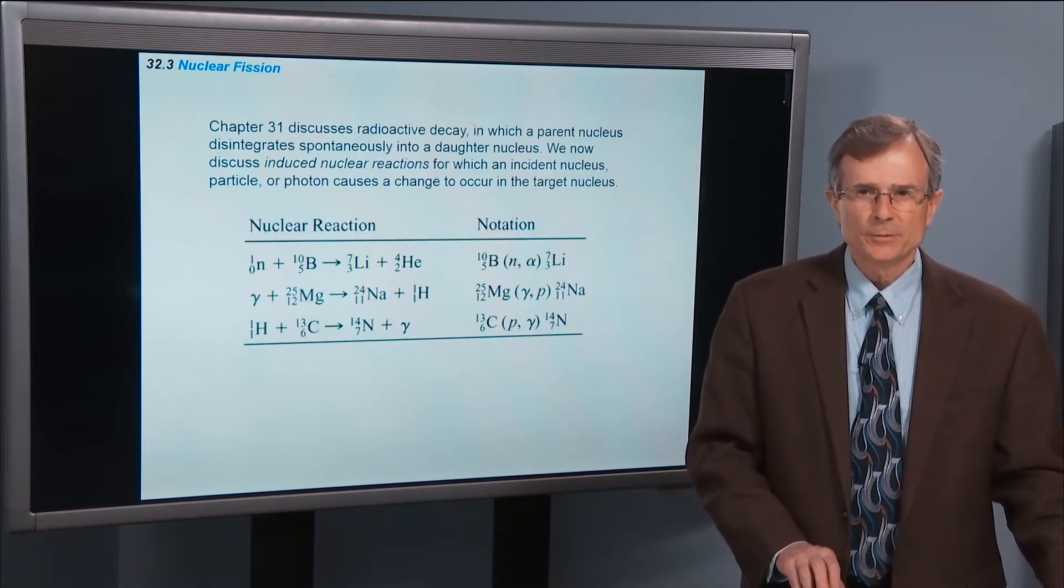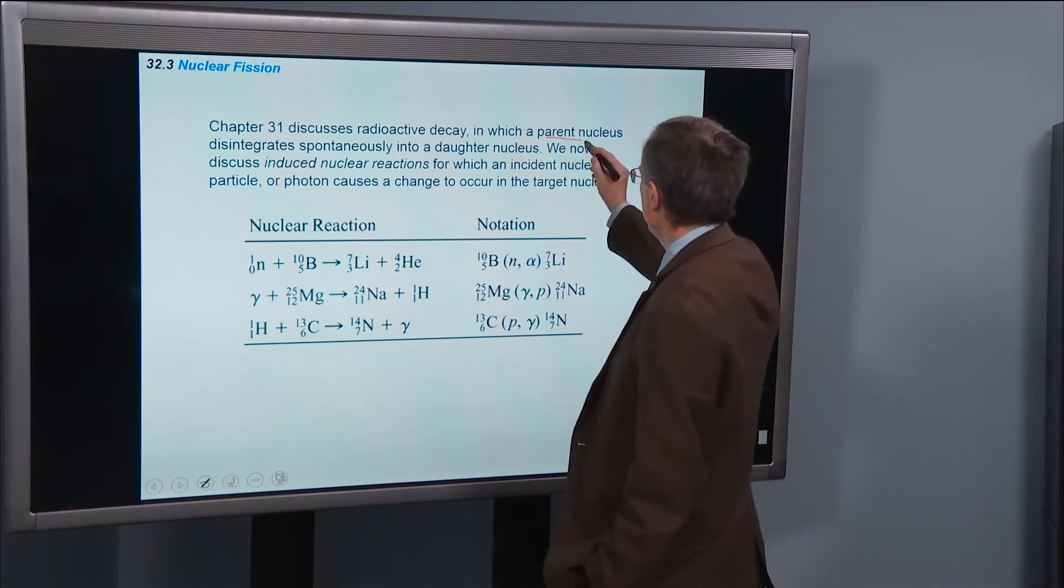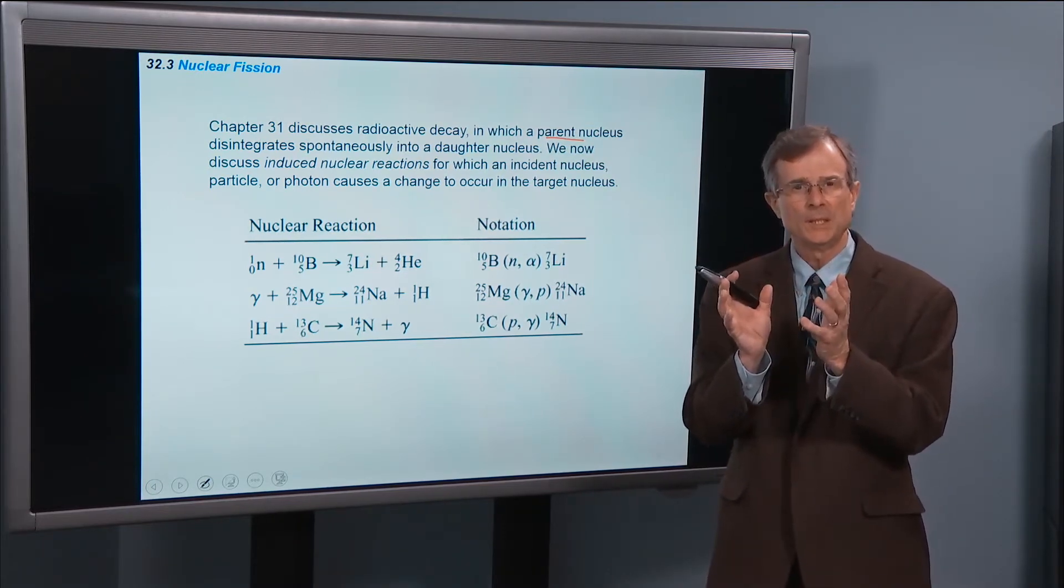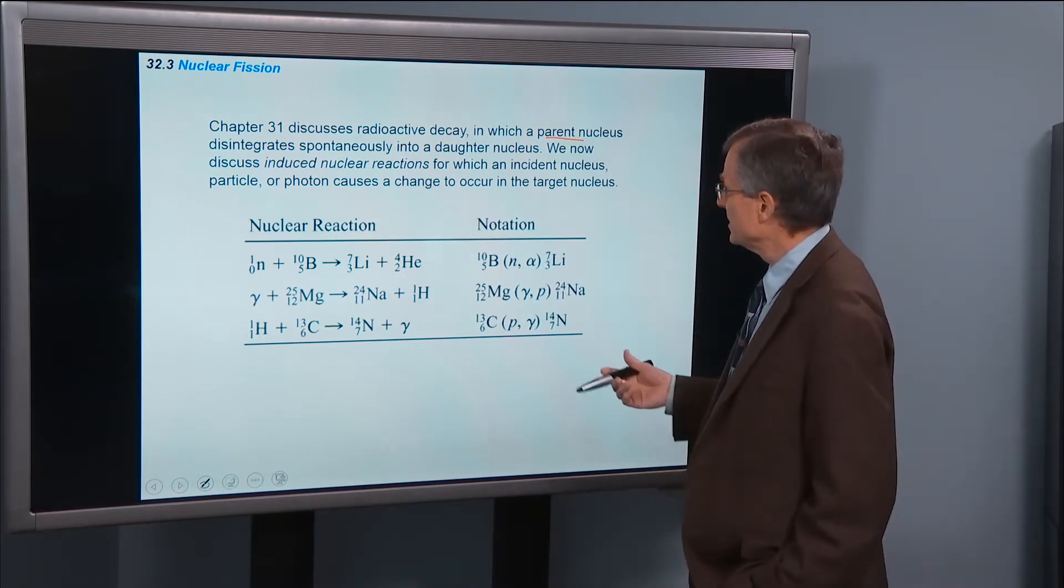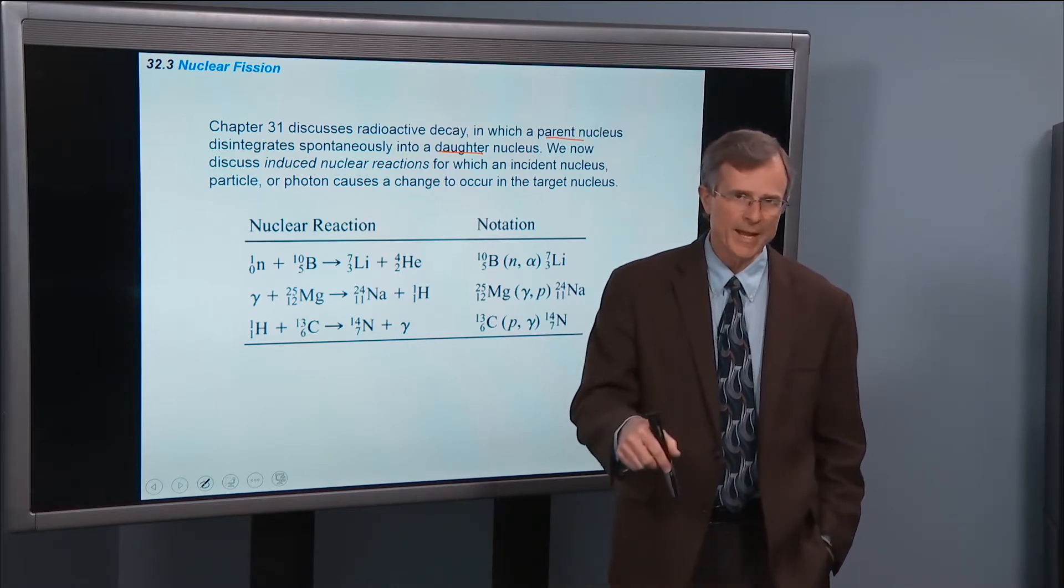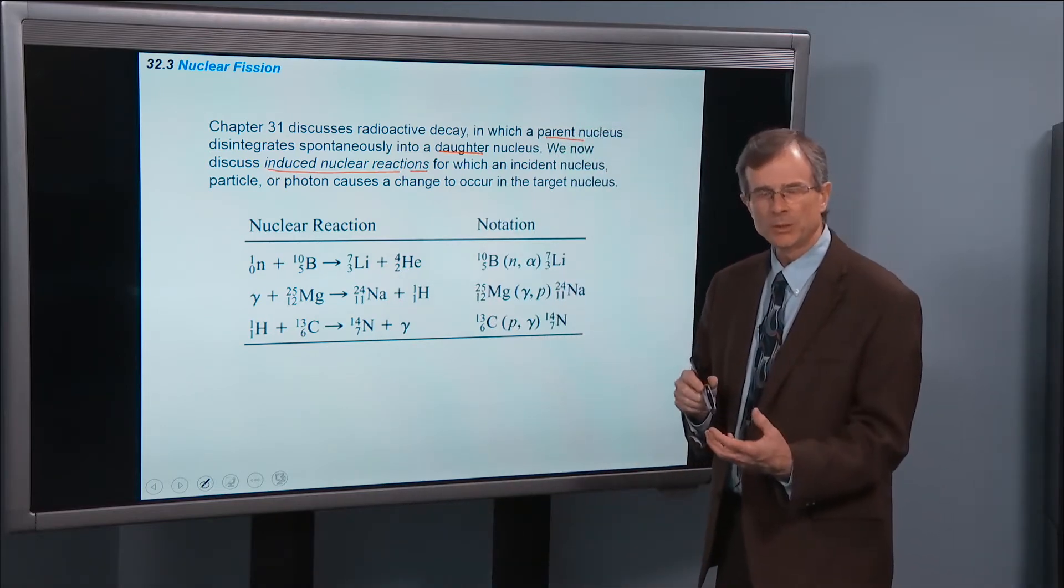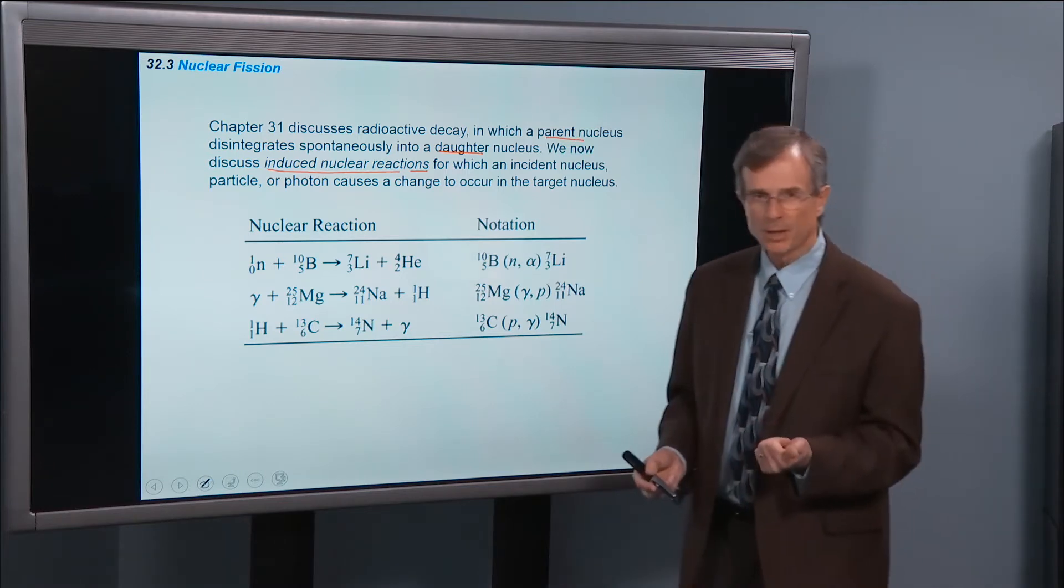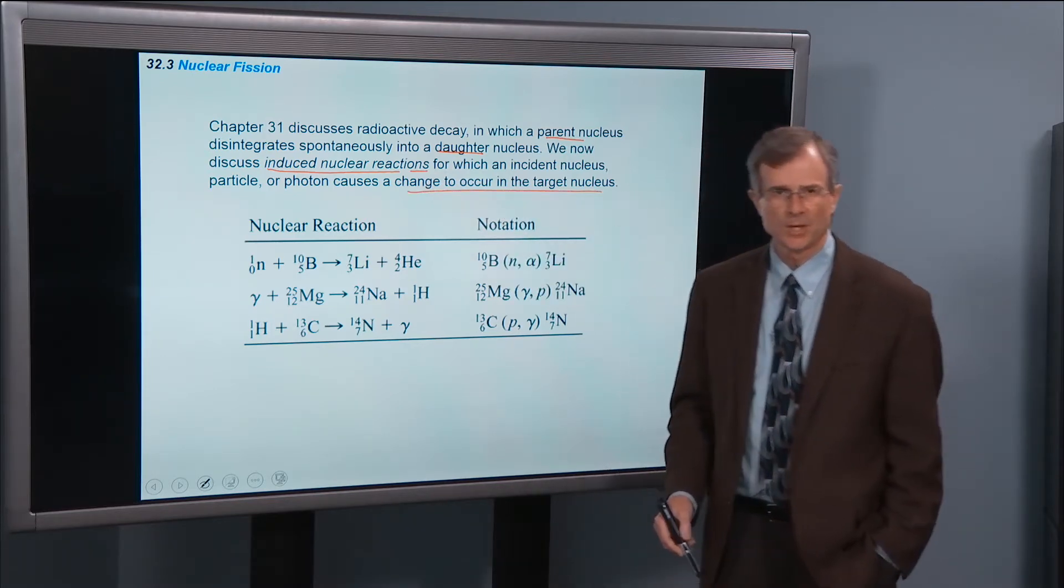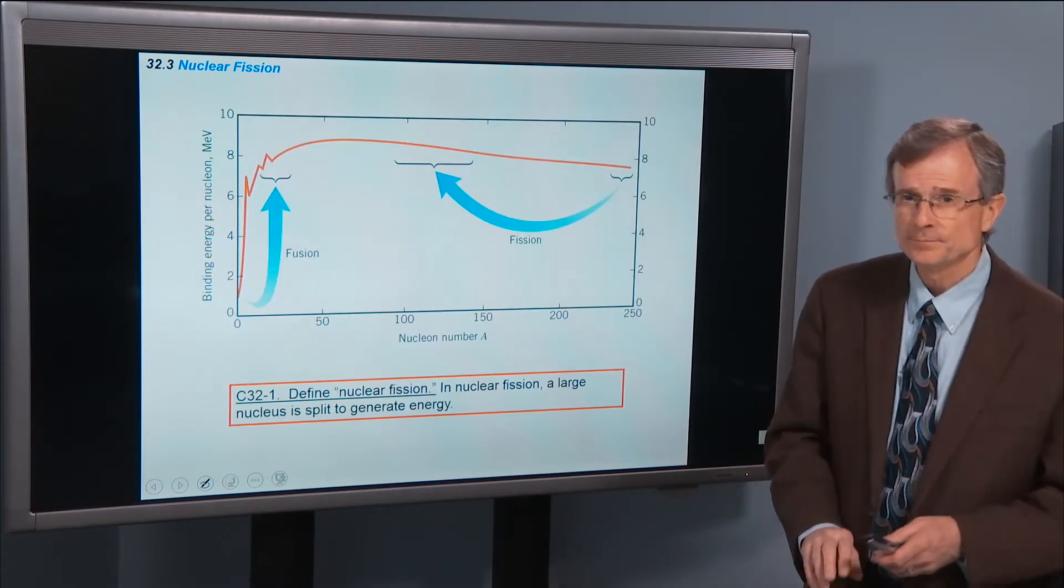So first section on nuclear fission. In the last chapter we talked about radioactive decay, where we have a parent nucleus that disintegrates spontaneously. Now we're going to talk about forcing a nuclear reaction, an induced nuclear reaction for which you've got something you're going to bang into that nucleus to try and get a nuclear reaction out of it. This could be a particle or a photon, another nucleus, and the idea is to get a change in the target nucleus. Why should we bother? Well, you get a lot of energy out of nuclear reactions, as we will discuss.